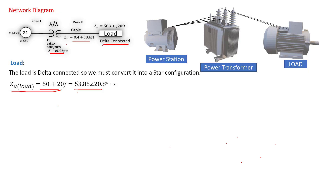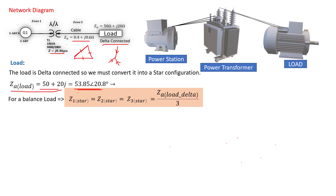So how do we convert a delta connected load into a star connected load? In a delta connected load there is a load on each branch, but we need to convert it into a star connected load. This is much easier because we can see what current is flowing on each branch of the star configuration compared to the delta configuration. For a balanced load, the formula is simple: to convert from delta to star, every branch of the star will be equal to one branch of the delta divided by three.